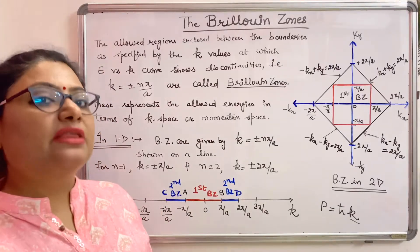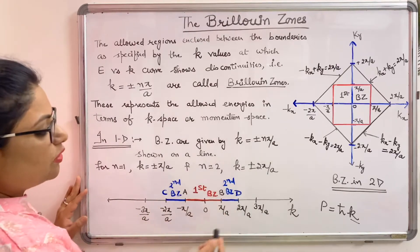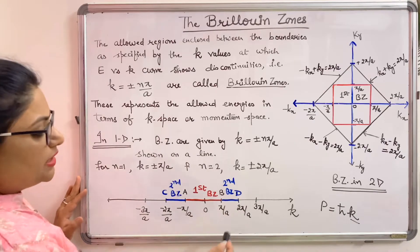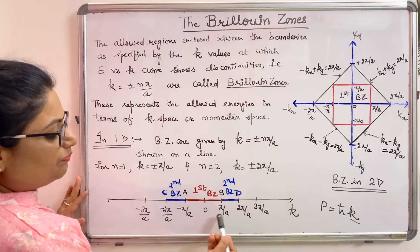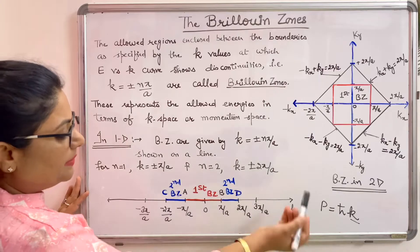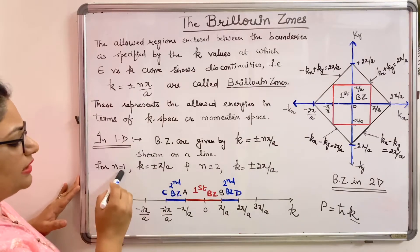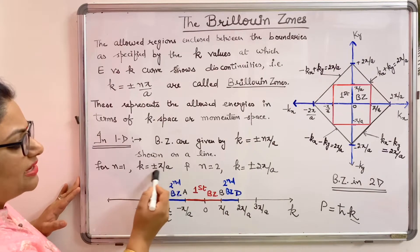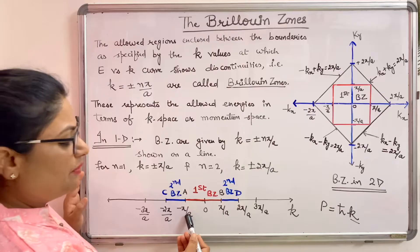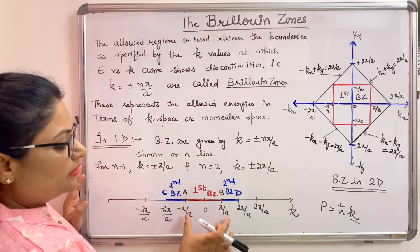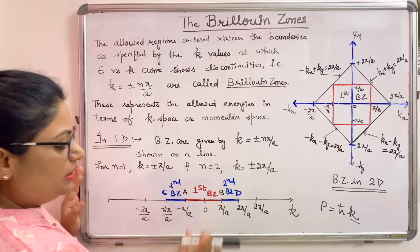At these zone boundaries there will be a forbidden range of energy. If we plot these Brillouin zones on a line in 1D, the k values range in terms of pi by a, 2 pi by a, 3 pi by a, and so on, similarly on the negative side. For n equal to 1, the boundaries are at plus or minus pi by a, and the region enclosed between these values represents the first allowed band or the first Brillouin zone.